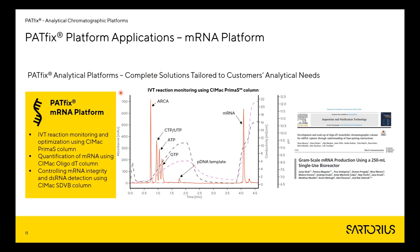The mRNA platform was also developed for control and optimization of mRNA production. With it, we can monitor and optimize the IVT reaction, quantify mRNA in every step of the process, control mRNA integrity, and detect double-stranded RNA if present. Here is one example of an IVT reaction sample — a quite complex mixture. We can see elution of ARCA capping reagent, then nucleotides, plasmid template, and mRNA produced in the IVT reaction. We can obtain all the information in less than five minutes.